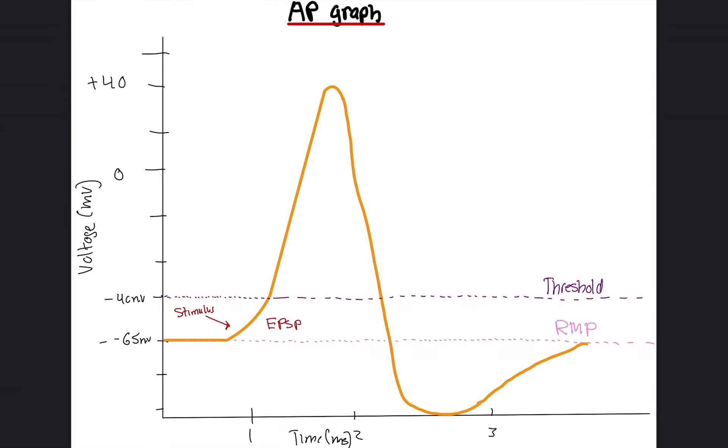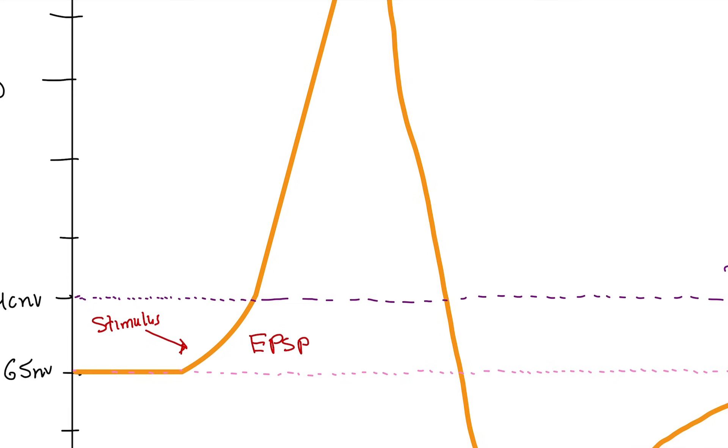At the threshold, what's going to happen is we're going to have an action potential get fired. But how is that going to happen? So at the threshold, like right here, voltage-gated sodium channels open. Voltage-gated sodium channels open. I should actually do that too because the stimulus is technically one, but whatever. Stimulus is one. Voltage-gated sodium channels open.